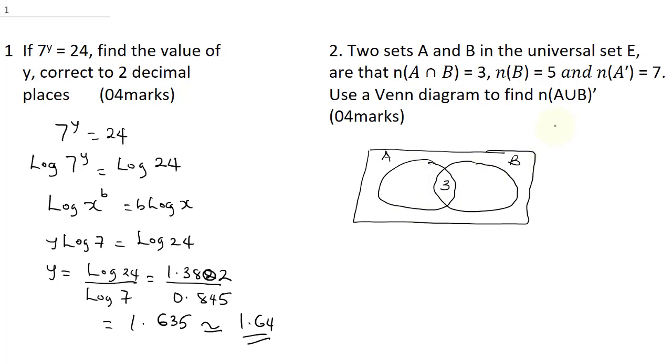Now, notice it says A intersect B is 3, so here it's going to be 3. Now, if B is 5, to get B only, B only will be n of B minus n of A intersect B, which will be 5 minus 3, that means B only will be 2.